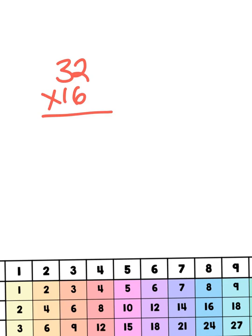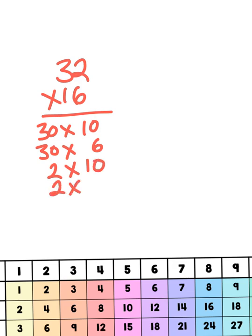These are two factors that multiply together. I don't know the product off the top of my head, but I can use partial products to help break this down into more digestible chunks. Instead of multiplying 32 times 16, I'm going to multiply 30 times 10, and 30 times 6, and then 2 times 10, and 2 times 6.